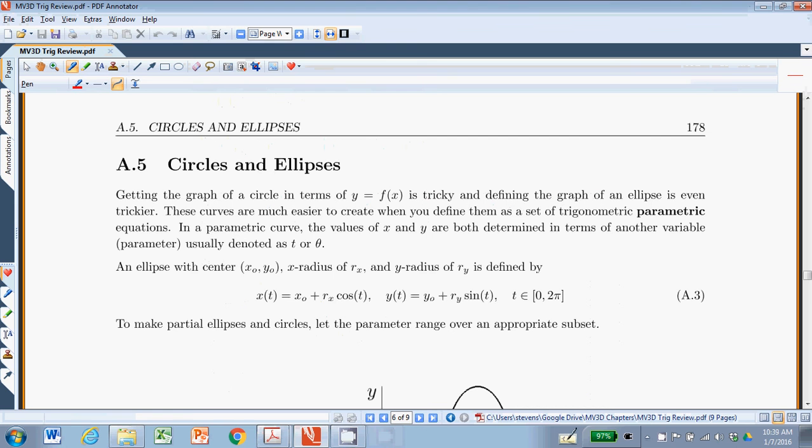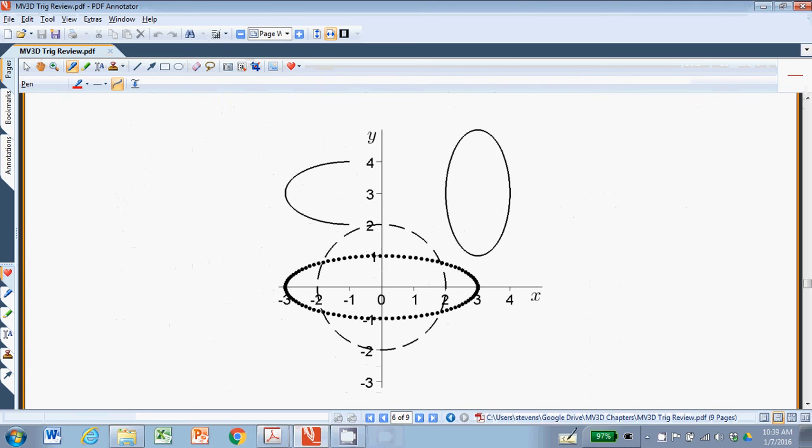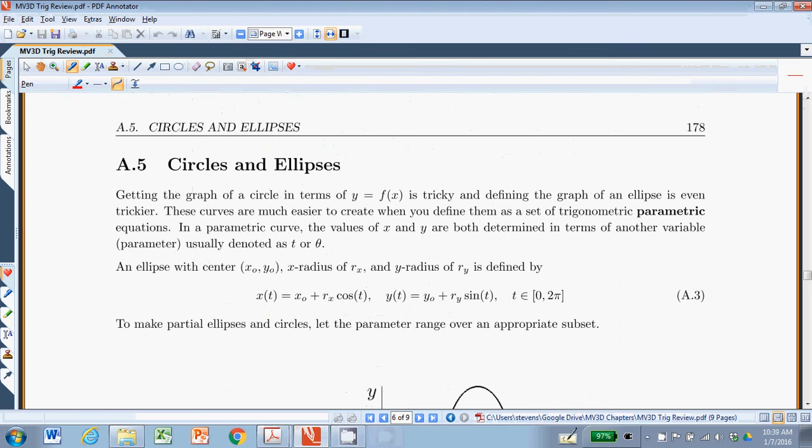That is A5 on page 178, and here's how it goes. We're going to be looking at a bunch of these ellipses, partial ellipses, circles, partial circles, and how do we create these?